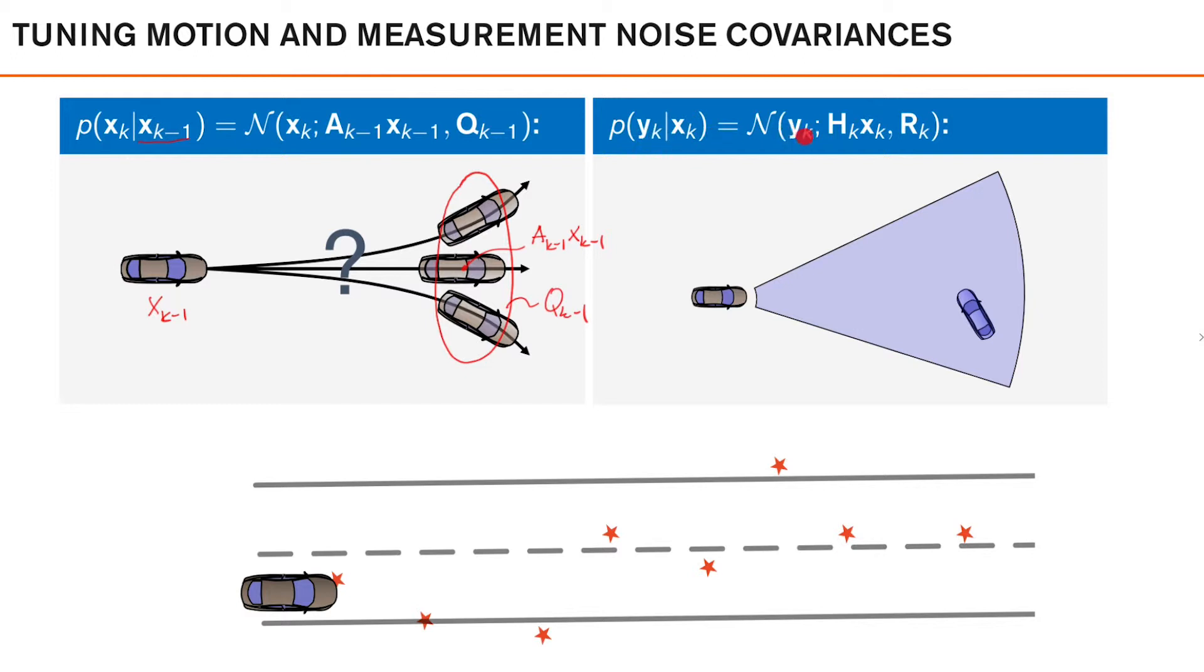Again, in a Kalman filter case, we describe this as a Gaussian, with a mean that describes where we expect the observation to be, and the covariance, rk, which models our measurement uncertainty.